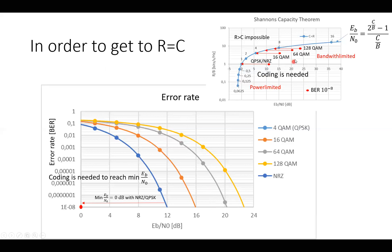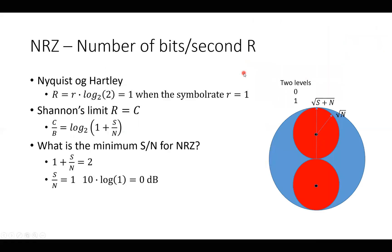And here you see also for different, here is for 64 QAM, here's for 16 QAM. And here you see for QPSK and NRZ. And we saw that for NRZ it was 0 dB.